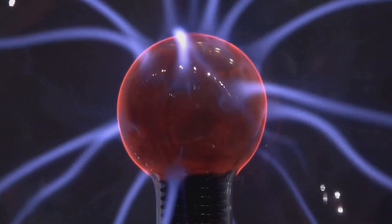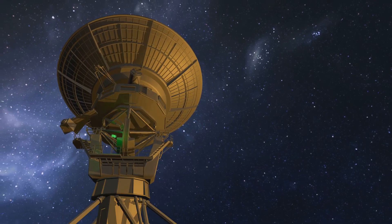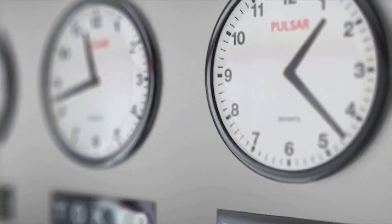Pulsars work in a similar way. Their beams of radiation sweep across space as they rotate. From Earth, we detect these beams as regular pulses of radio waves. The timing of these pulses is incredibly precise...